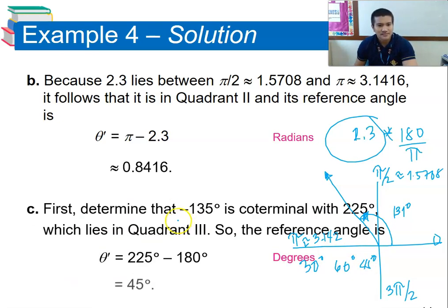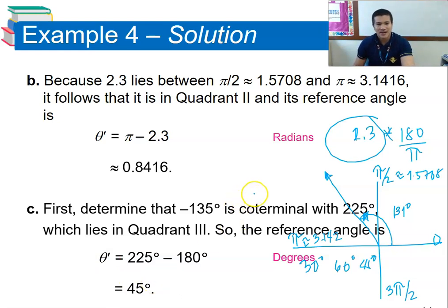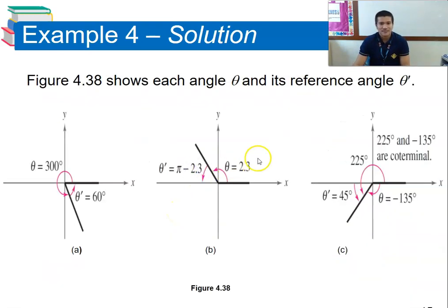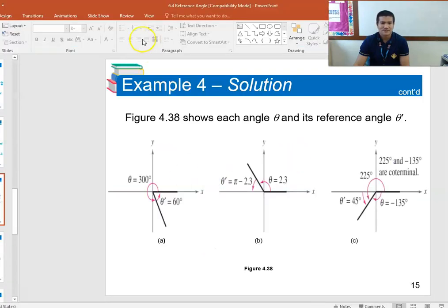For example c, the angle 315° is co-terminal with 225°, which lies in quadrant three. The reference angle is 45°. Knowing the reference angle is 45°, we can determine the values of sine, cosine, and tangent for that angle.